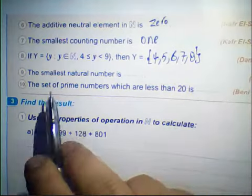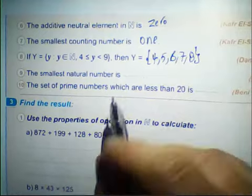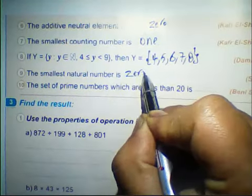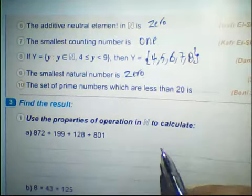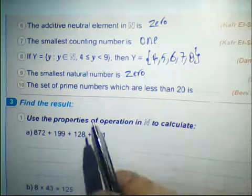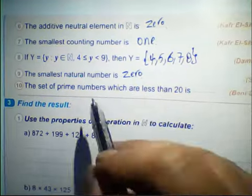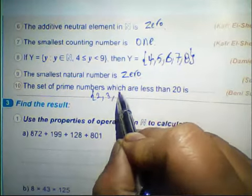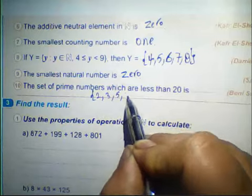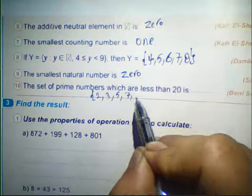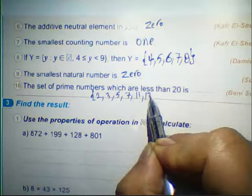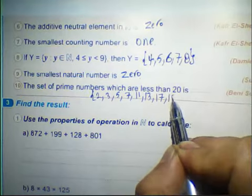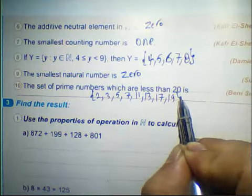The smallest counting number is 0. The prime numbers less than 20 are: 2, 3, 5, 7, 11, 13, 17, and 19.